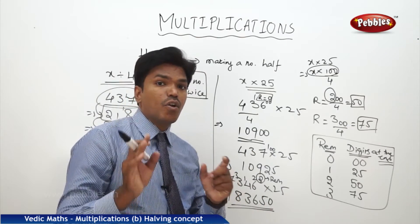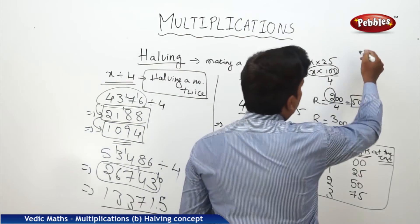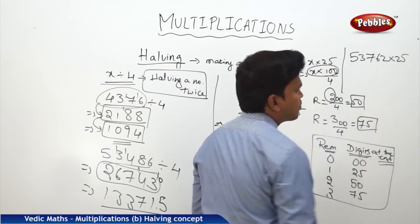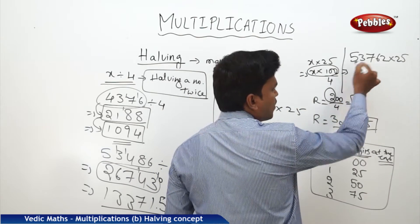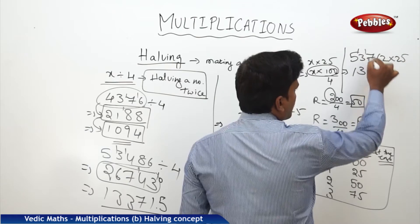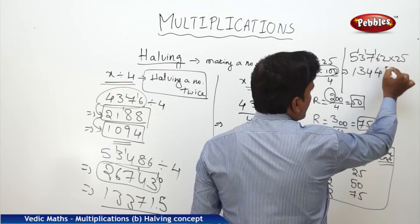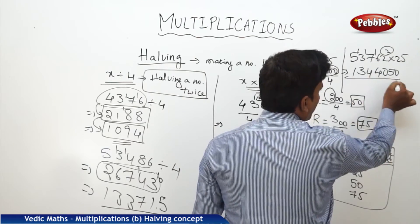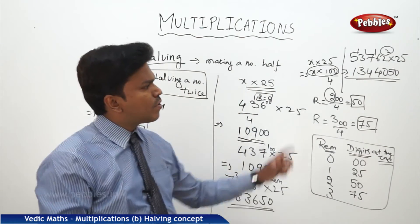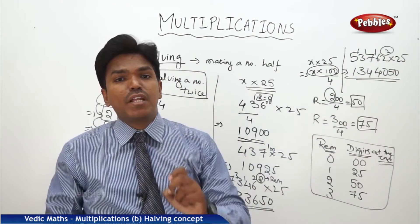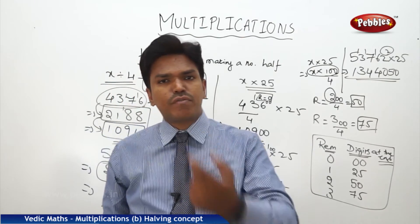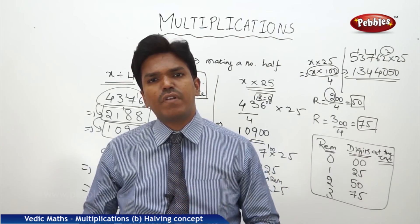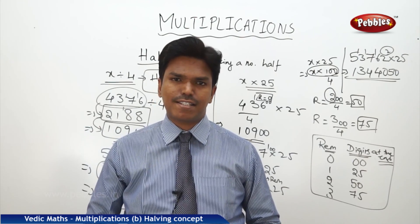No matter how big the number is, the method works the same. For example, 53762 into 25: divide by 4 to get 13440 with remainder 2. Add 50 at the end. Answer: 1344050. No need to know the 25 times table. Those are the advantages of halving. Now we will move to the next concept in our multiplication techniques.